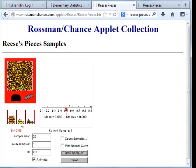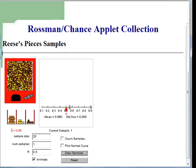And when it gets the 25 candies here, what it has found is that 0.56 of these 25 candies are orange. So my sample proportion is 0.56 and it's plotted right here on this grid.